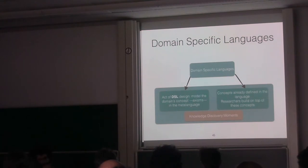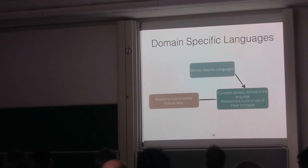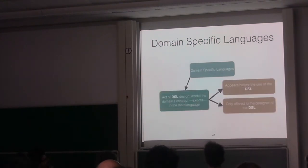But there exists another knowledge discovery moment that happened at the time of the design of the language. Because in the design you have to model the concepts of their domain. You have to create the axioms. And this allows you to maybe discover new things. This is maybe related to Kuhn's idea of normal science, because the paradigm is already crystallized in the programming language. And this is actually, practically, super important.